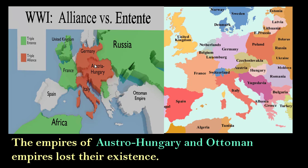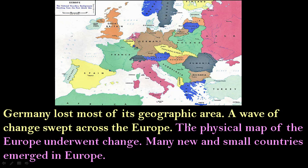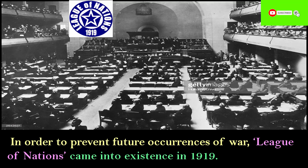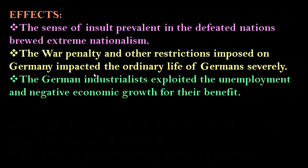The Triple Entente forced Germany to sign the Treaty of Versailles, which was an insulting one for Germany. The empires of Austria-Hungary and the Ottoman Empire lost their existence. Germany lost most of its geographical area. A wave of change swept across Europe; the physical map of Europe underwent change. Many new and small countries emerged. In order to prevent future occurrences of war, the League of Nations came into existence in 1919.